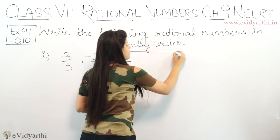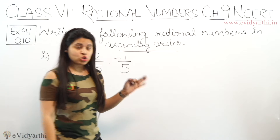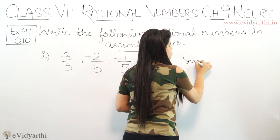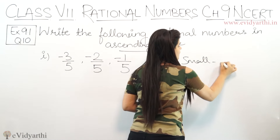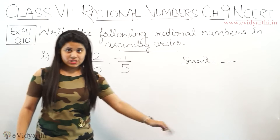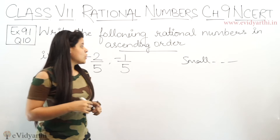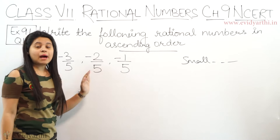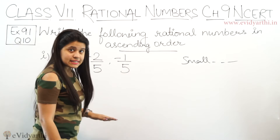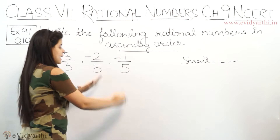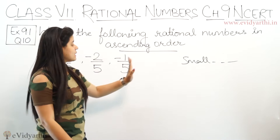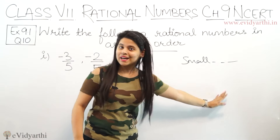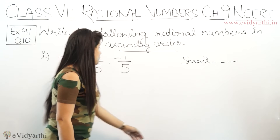Ascending order का मतलब क्या होता है? सबसे पहले छोटा and then उससे बड़ा-बड़ा करके हम largest number last में लिखते हैं. So अब यहां पे आपको यह rational numbers दे रखें, आपको इनको इस तरह से arrange करना है, कि पहले सबसे छोटा number लिखेंगे, फिर उससे बड़ा and so on.